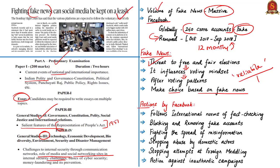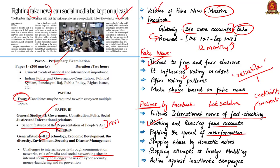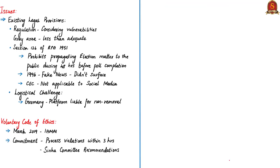The article discusses steps taken by Facebook to help ensure the Lok Sabha election was free from interference both foreign and domestic. The platform followed international norms of fact-checking to ensure credibility of content in India. Steps taken included blocking and removing fake accounts, fighting the spread of misinformation, stopping abuse of the Facebook platform by domestic actors, spotting attempts at foreign meddling, and acting against inauthentic coordinated campaigns.